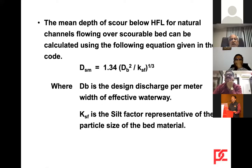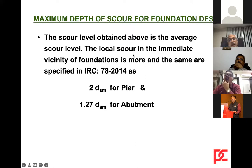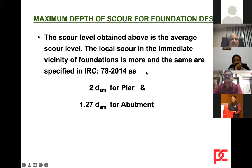The mean depth of scour below HFL for a natural channel flowing over a scourable bed can be calculated using the equation for dsm given in IRC6. Then the maximum scour level is obtained. Local scour around obstructions like piers is over and above the overall bed scour. This local scour is specified in IRC78 as 2·dsm for piers and 1.27·dsm for abutments.